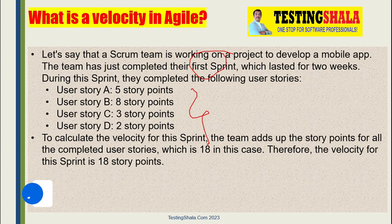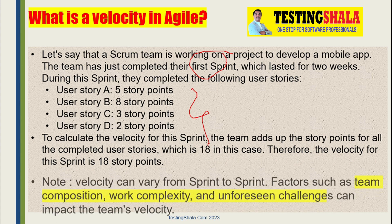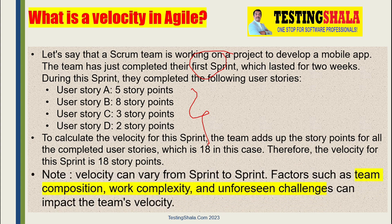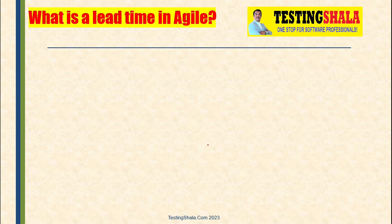That means the overall team's velocity is 18 story points. This velocity defined for a particular sprint can vary in another sprint as well, because various factors like team composition, complexity of the work, and unforeseen challenges also impact the overall velocity. This is how we calculate the velocity parameter in an Agile project.